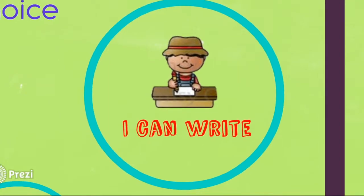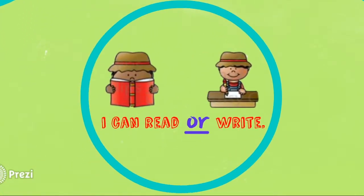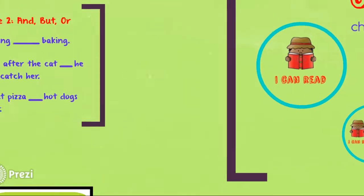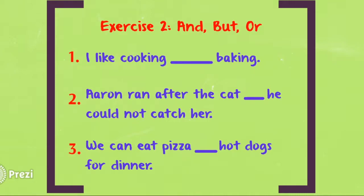And to combine the choices, you would say I can read or write. So in our last exercise, you will be deciding whether each of the three sentences will have the conjunctions and, but, or. I will give you a moment to fill in the blanks on your own and I will go over the corrections in a moment.